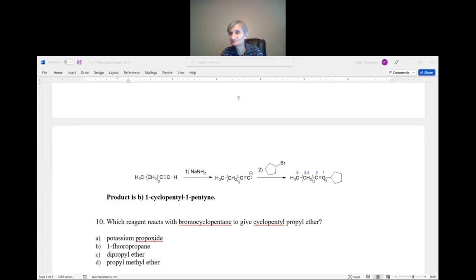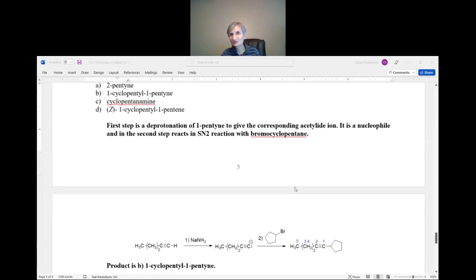And so, this is the product. And so, this is cyclopentyl group. And so, this is cyclopentyl one pentyne. Remember how we name alkynes. The longest chain that contains triple bond. That is open chain. Five carbons. So, that's one pentyne. And on carbon one, we have another chain. In this case, a ring. So, cyclopentyl one pentyne.